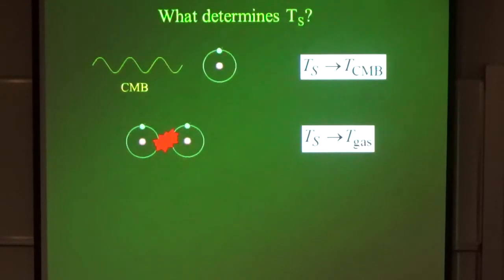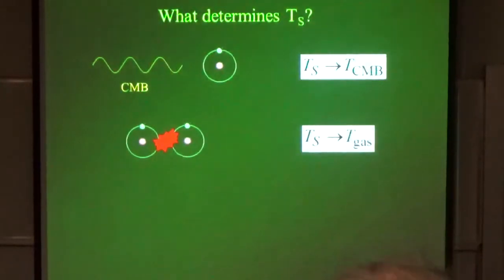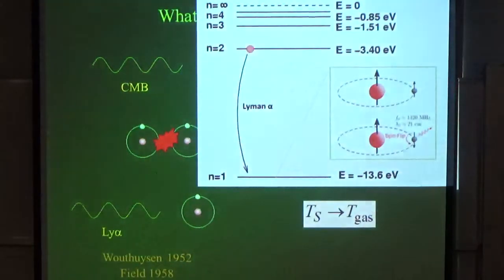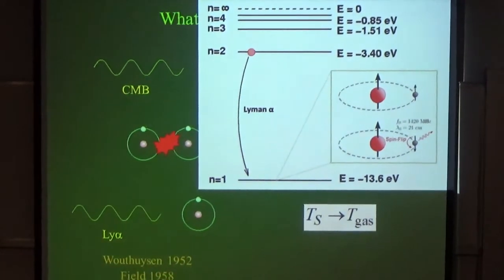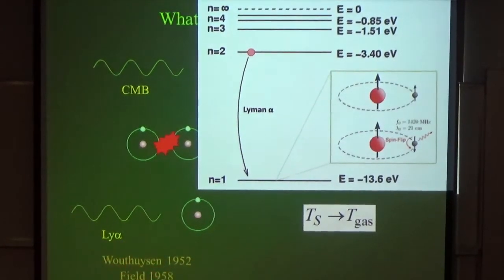The main question is which process wins. If the spin temperature equilibrates with the CMB, the hydrogen is invisible — like red dots on a red background. But once the spin temperature differs from the CMB, you start to observe the early hydrogen. As the universe expands, density goes down and one effect wins over the other. Luckily, there's another effect — worked out in the 1950s, 50 years before people realized its importance for cosmology — called the Wouthuysen-Field effect, or WF effect.